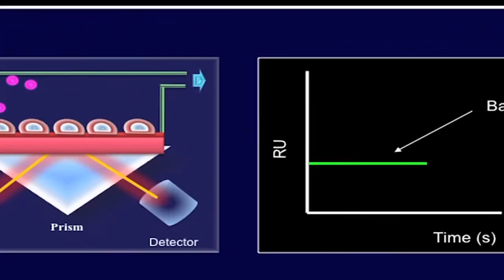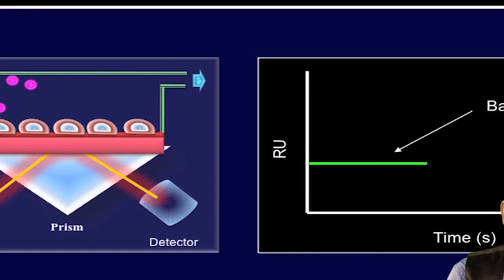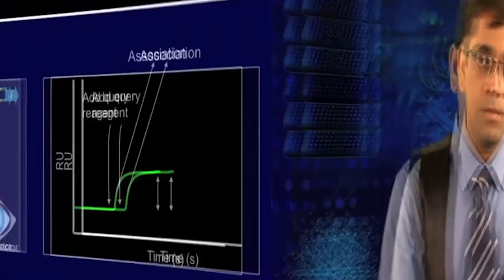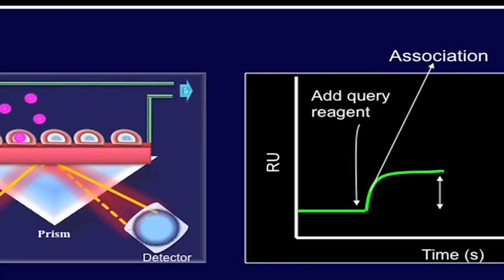As you can see in this slide, there is a prism, a light source, a gold-coated chip, and a ligand immobilized on the chip surface. Initially, the running buffer is injected onto the immobilized surface, which generates a baseline. The baseline remains straight until the query molecule or the analyte is injected. The surface is first washed with the running buffer, followed by injection of the query molecule in the same running buffer. As the analyte starts interacting with the ligand, the association phase can be observed in the SPR sensogram, from which the association rate k-on or k-a can be derived.